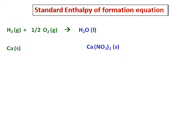The next compound is calcium nitrate. Calcium nitrate forms from calcium solid and nitrogen gas — those are the standard states of calcium and nitrogen. We also need oxygen, whose standard state is O₂ gas. Balancing gives six oxygens, so we place three O₂ on the reactant side.